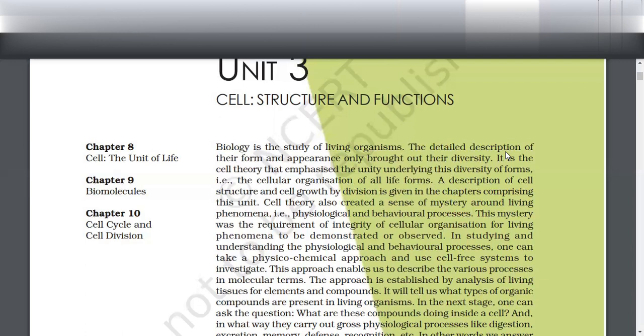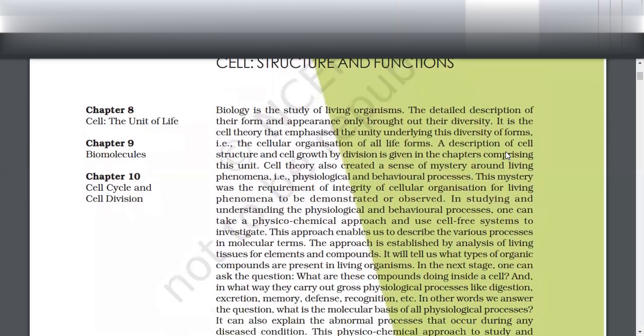After the cell was discovered, the important part that came next was the nucleus. Who first discovered the nucleus? Robert Brown. Remember, in the center there is a brown colored part - that is the nucleus. So Robert Brown discovered it.